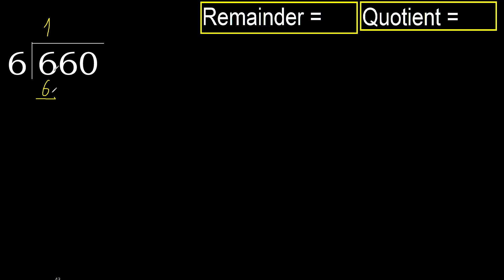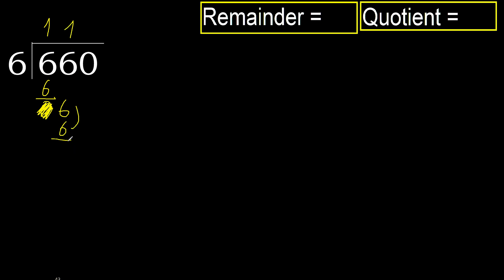Subtract next, eliminate 0 on this side. 6 multiplied by 1 is 6, is not greater. Subtract next, eliminate 0.